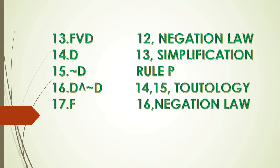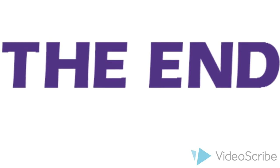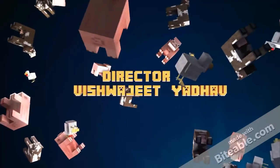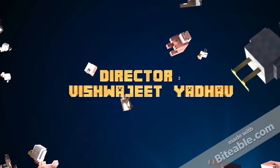First of all, take P or Q implication negation R, by using rule P. Then negation R implication S, and negation T, by rule P. Then P or Q implication S negation R — by the 1st and 2nd hypothetical syllogism.